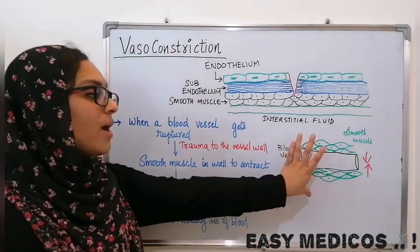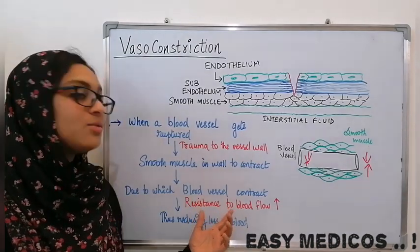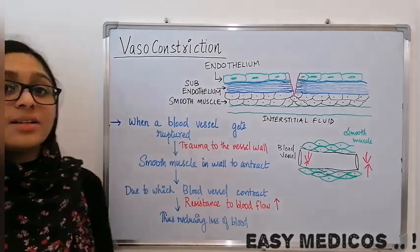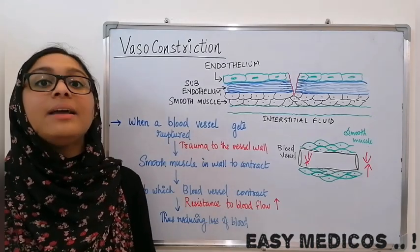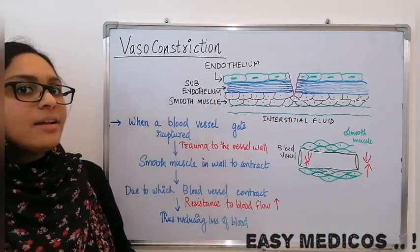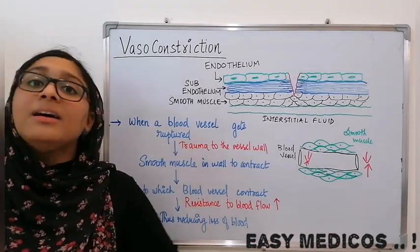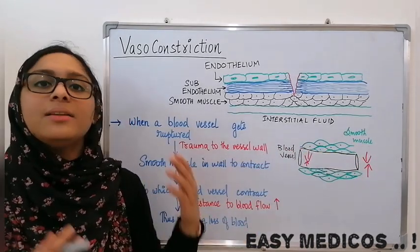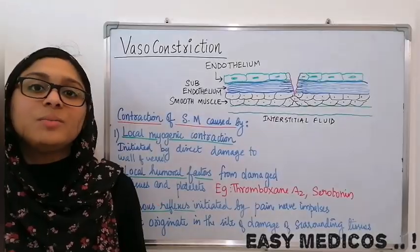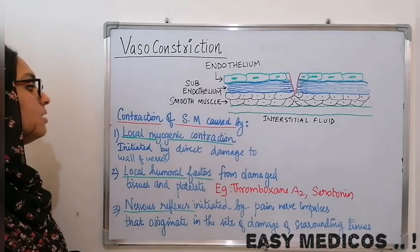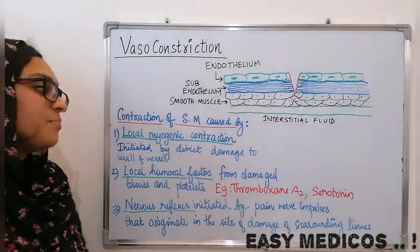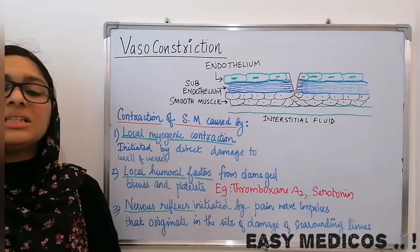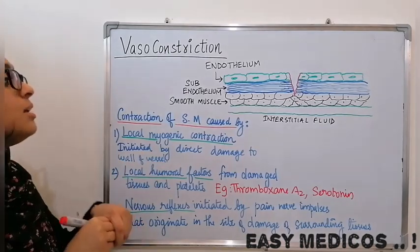Vasoconstriction increases resistance to the flow of blood, and the surrounding tissues exert back pressure through this flow of blood, thereby reducing the loss of blood. That means vasoconstriction will reduce excess loss of blood. This smooth muscle contraction is caused by local myogenic contraction — local myogenic spasms initiated when there is direct damage to the wall of the vessel.